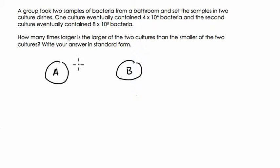And these are different groups of bacteria with the bacteria inside the dish and let it grow. And the first one, they don't name it, but I'm calling it A, is 4 times 10 to the 4th bacteria. They're saying it eventually contains, so the bacteria are growing. We're stopping it at some point and measuring the amount of bacteria. So that's the amount of bacteria in the first sample, and the second one is 8 times 10 to the 8th.